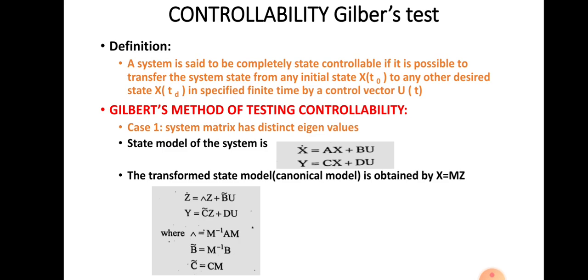So a system is said to be controllable if it is possible to convert the system state from one state to another state. If we are transferring the system state x(t) from x(t0) to x(td) by a vector u(t), then we can say that the system is completely controllable. That is the definition. We are using different tests; the first test is Gilbert's method of testing controllability.